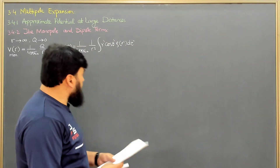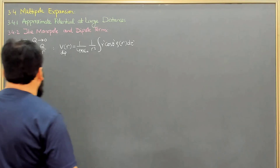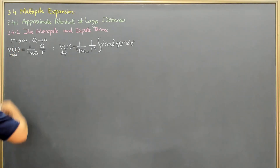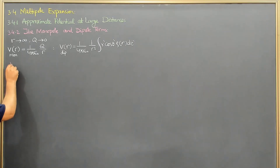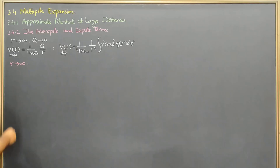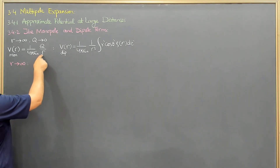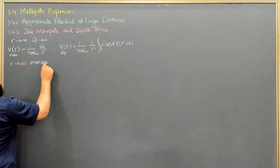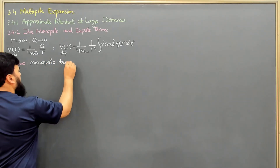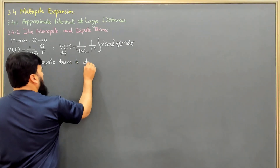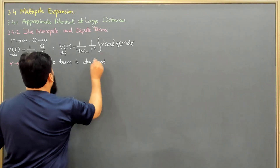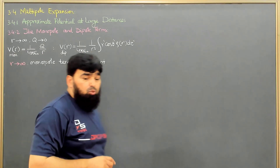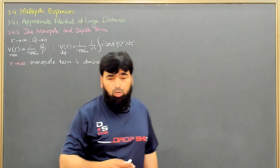When r goes to infinity, the monopole term is the dominant term in the multipole expansion. It is dominant in the sense that it decays very slowly, while at large distances the higher-order terms decay very fast. Because the monopole term decays slowly compared to the others, it is the dominant term.